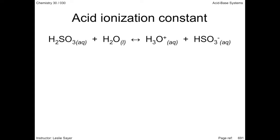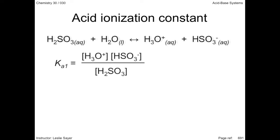In this acid-base equation, aqueous hydrogen sulfite ionizes in water to produce the hydronium and hydrogen sulfite ions. The acid ionization expression provides a way of determining the acid ionization constant, which according to your data booklet is 1.4 times 10 to the negative 2.